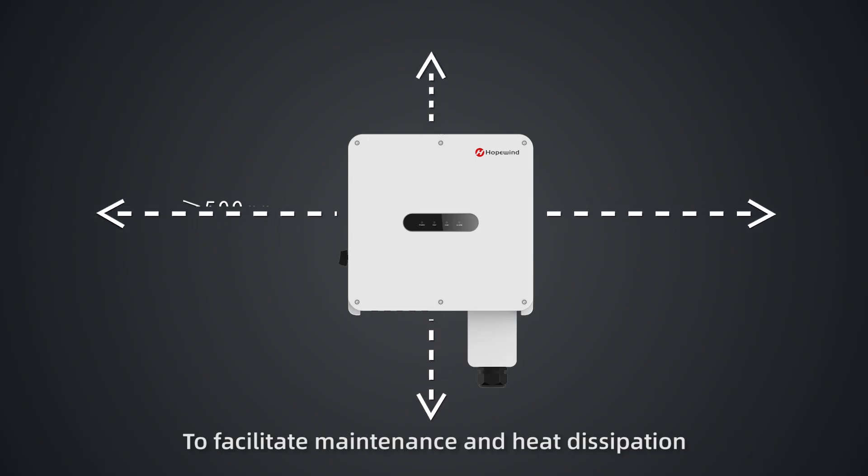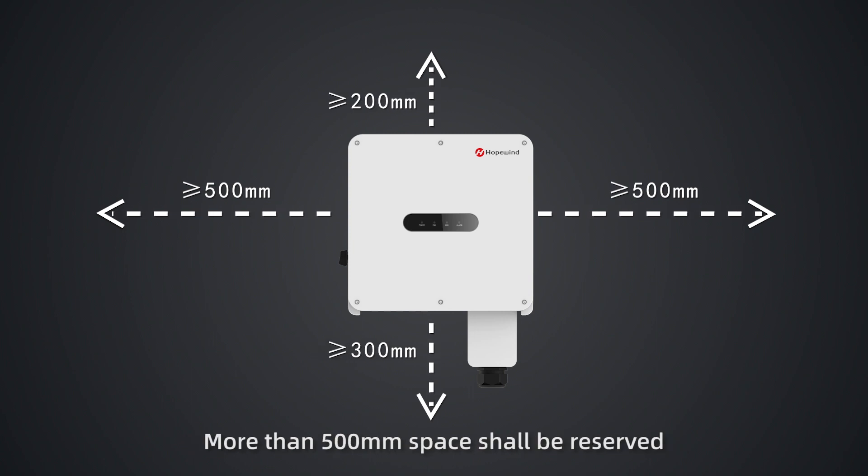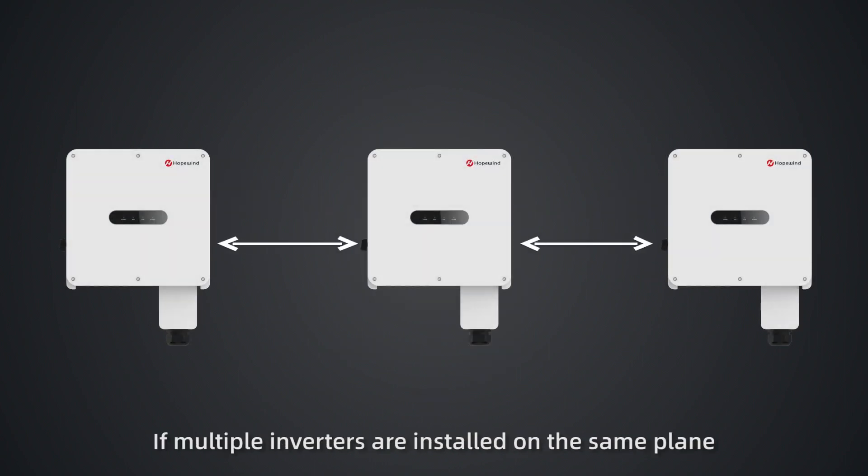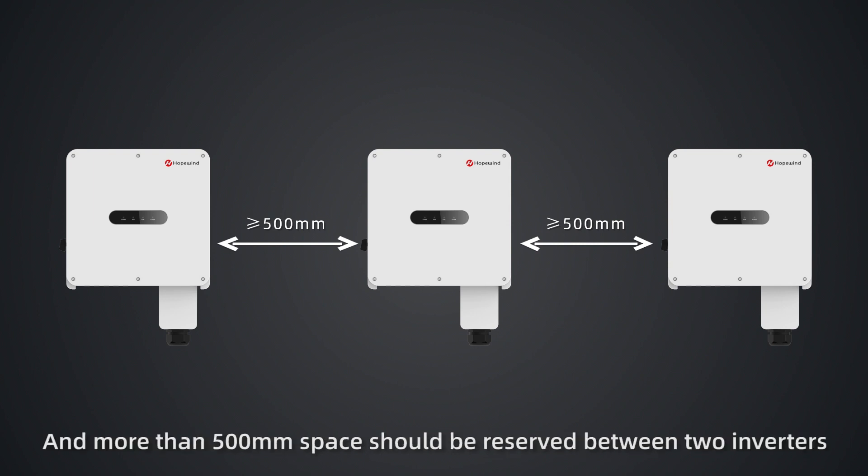To facilitate maintenance and heat dissipation, more than 500mm space shall be reserved on the left and right of the inverter, and at least 200mm space above, and 300mm space below the inverter. If multiple inverters are installed on the same plane, side-by-side installation is recommended, and more than 500mm space should be reserved between two inverters.